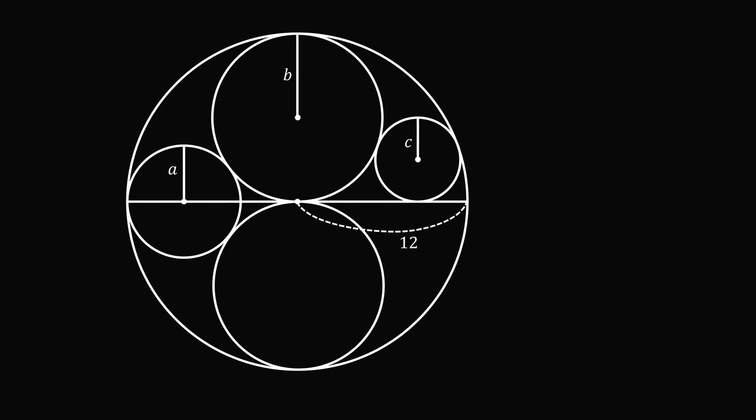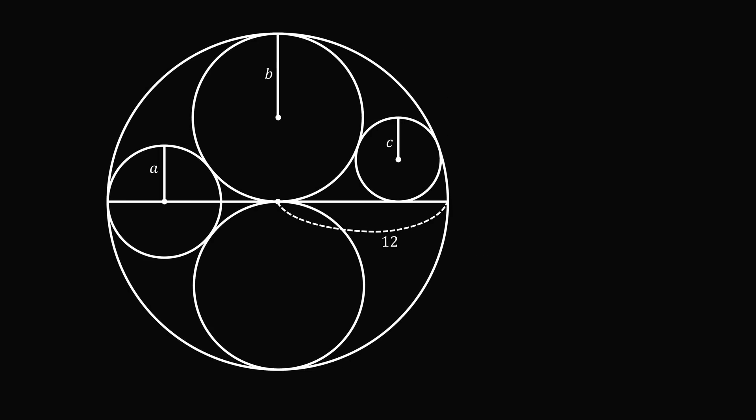What's fun about this problem is the three radius lengths are in increasing order of difficulty to calculate. Let's start with the radius length b. Construct a diameter of this circle, which has length equal to 2b. This is exactly a radius of the large circle, so 2b is equal to 12, which means b is equal to 6. Starts out easy enough.